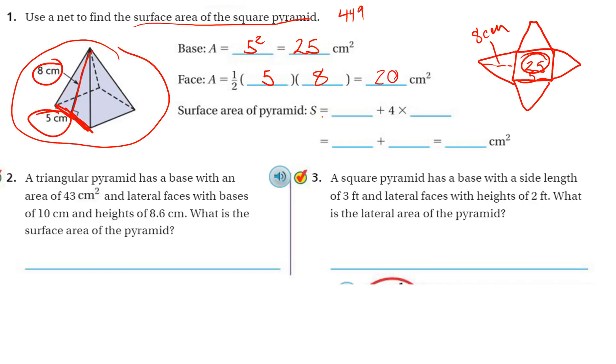So the surface area of the whole thing is going to be 25, the area of the square, and then 4 triangles that are each 20. So 4 times 20. So 25, and then 4 times 20 is 80. So our surface area is 105 centimeters squared total. Each one of these triangles is 20, and the area of the square base is 25.